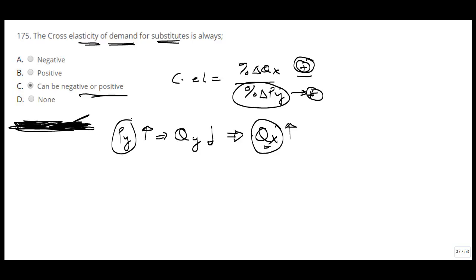So you have numerator is positive, denominator is positive. That means your cross elasticity will always be a positive number. So cross elasticity for substitutes will always be positive.